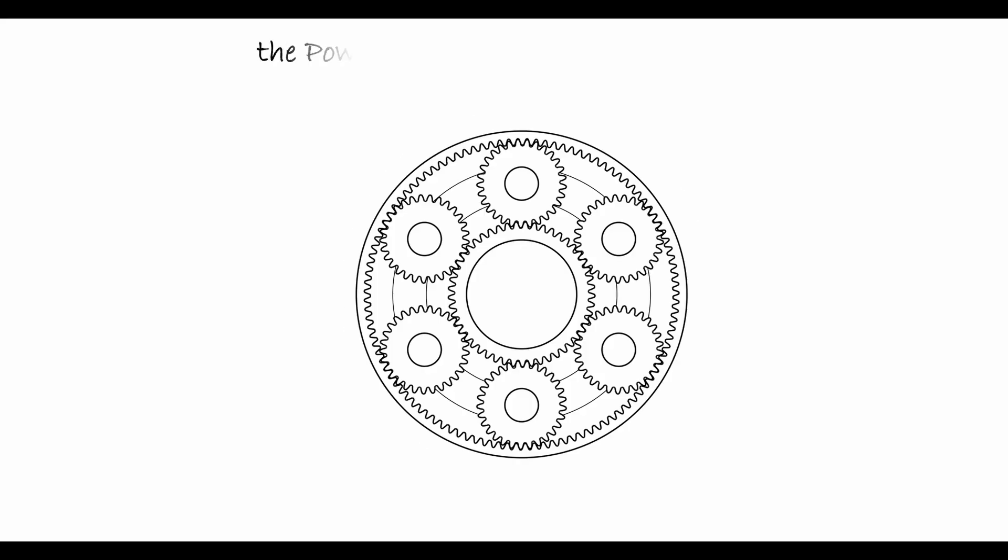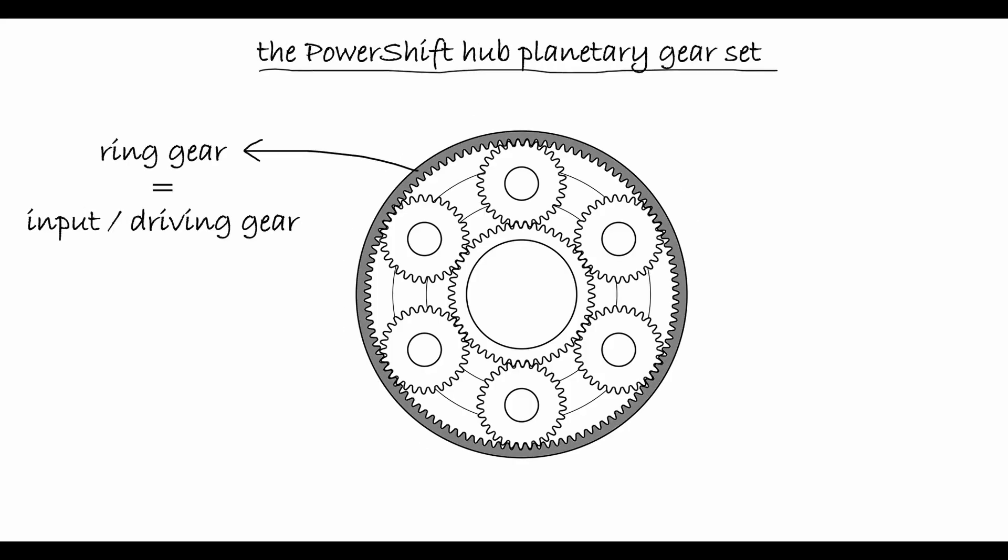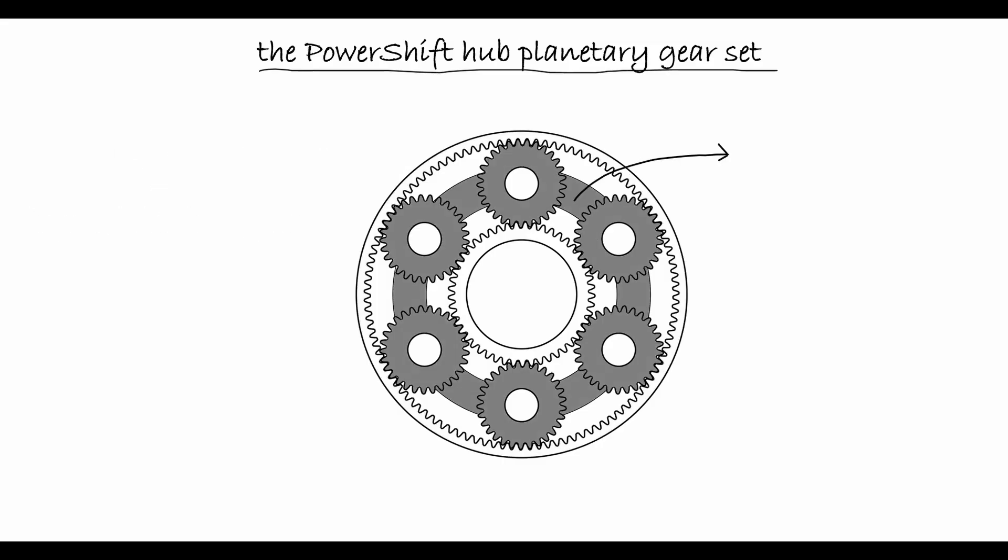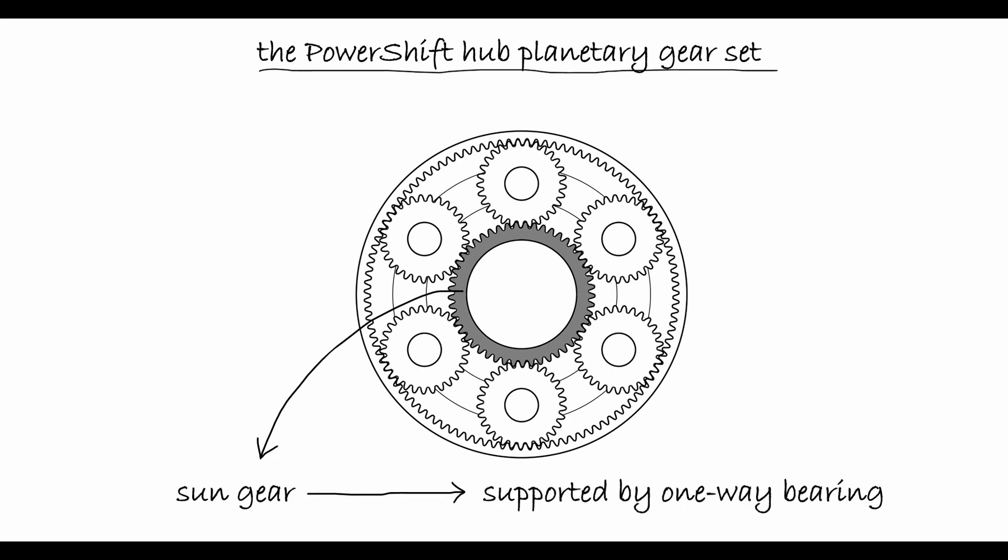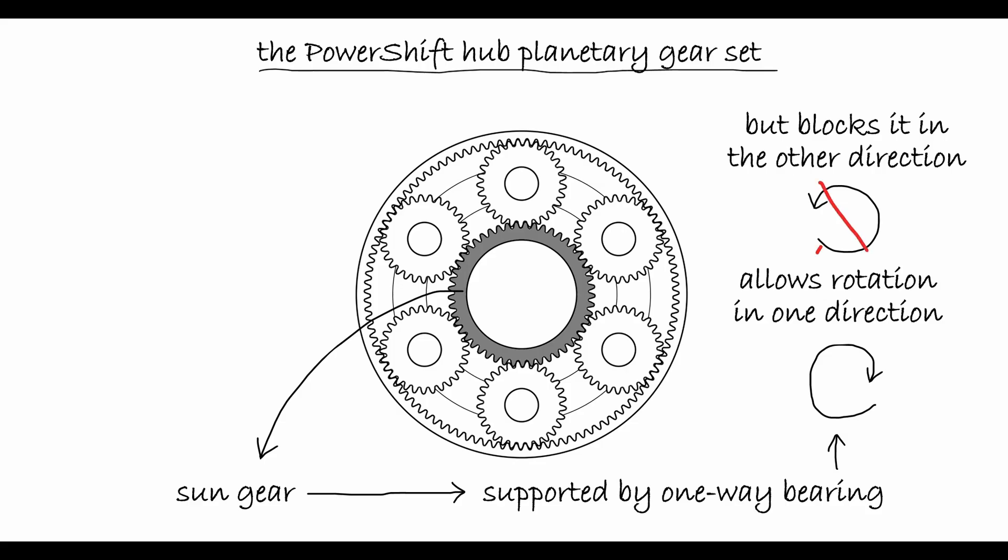This two-speed transmission is realized by a planetary gear system, where the ring gear is the input, or driving gear, and the planet carrier, which holds the planet gears, serves as the output, or driven gear. The central, or sun gear, is supported by a one-way bearing, which allows rotation in one direction, but blocks it in the other direction.